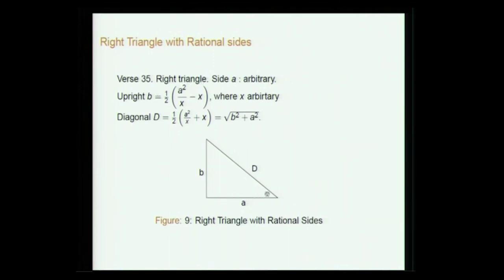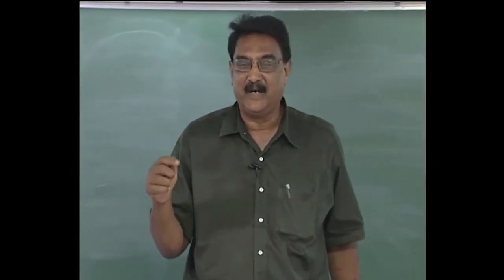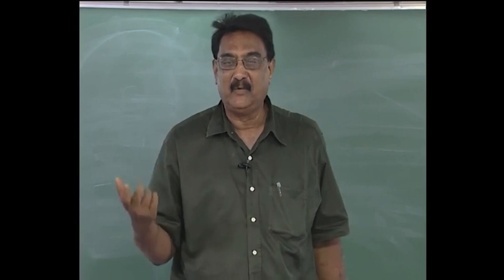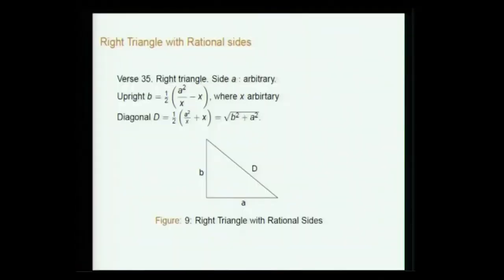Another way: suppose you take side a as arbitrary rational and take the upright to be half of (a²/x − x), then the diagonal will be half of (a²/x + x), which equals √(b² + a²), so it will be rational. There is a slight non-triviality: if you take a right triangle with sides 1 and upright 1, the diagonal is √2 which is not rational. So you must have some method of constructing the rational thing.